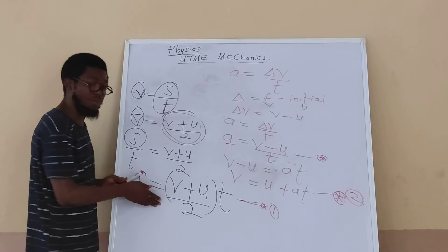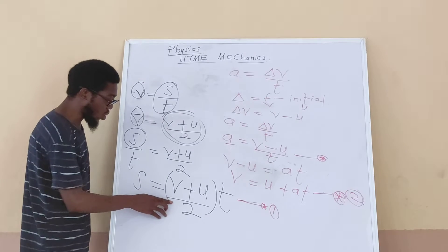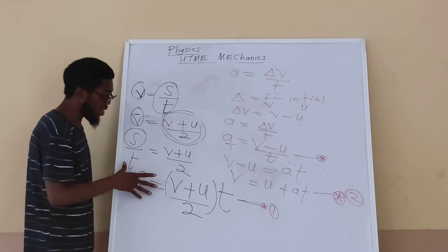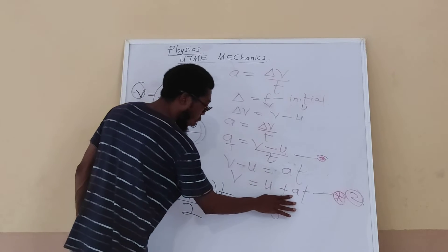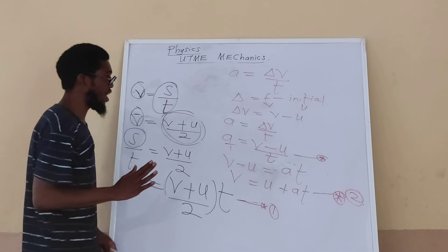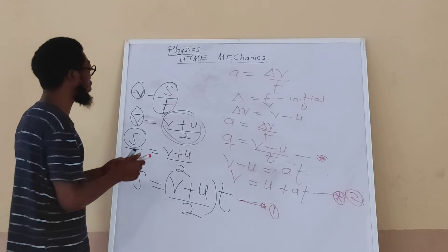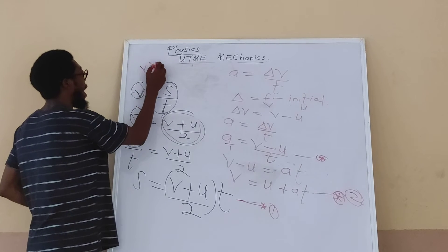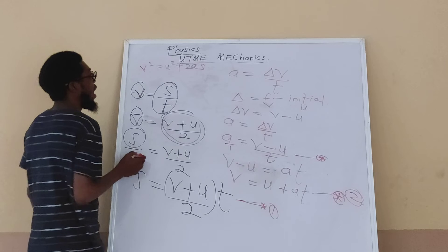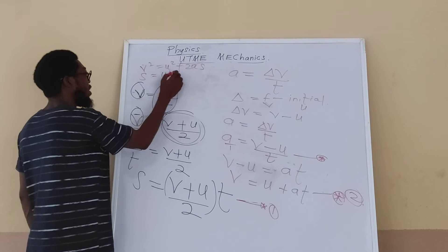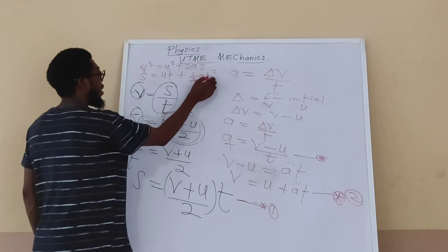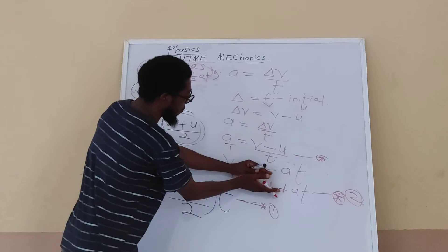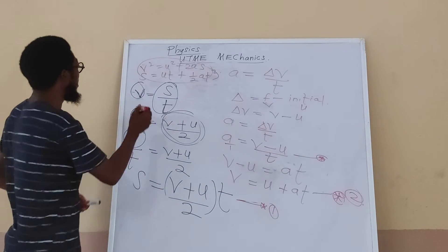Equation 1 comes from the definition of average velocity — use it when there is no acceleration in your question. Equation 2 comes from the definition of acceleration. Together these allow us to derive two more equations: v² = u² + 2as, and s = ut + ½at². To get these, we combine the definition of average velocity and the definition of acceleration.